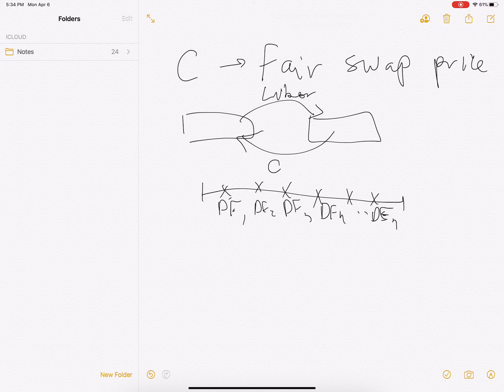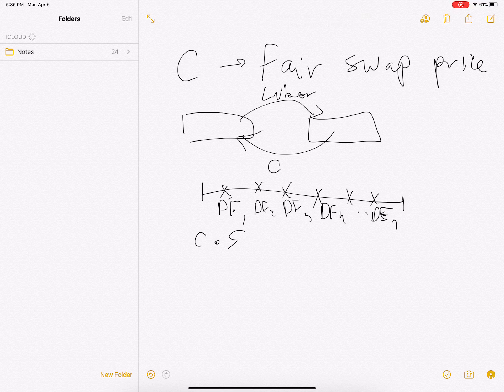What is the market value of the fixed leg? Because I'm paying C, I'm paying a constant swap at each point in time, then it means that I'm going to have basically this to have the market value, right?